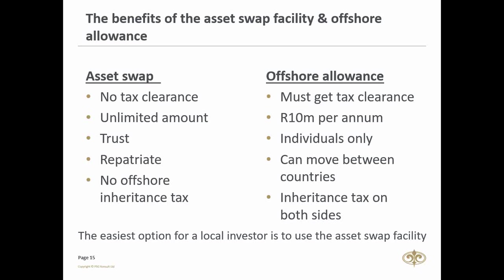For the offshore allowance, you must obtain tax clearance before taking money offshore. You are limited to 10 million rand per annum per person plus your one million rand travel allowance per year, and this is only available for individuals over 18. Once you have the money offshore with your tax clearance, there's no need to repatriate back to South Africa — you can sell your investment and move it to other countries. However, in the event of death, inheritance tax applies on both sides: offshore and locally.